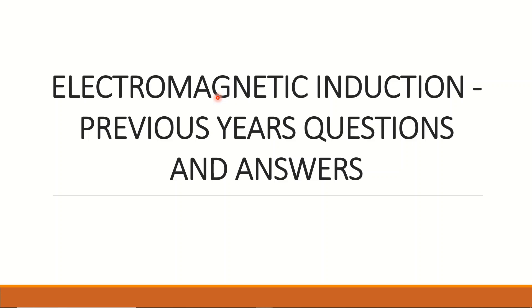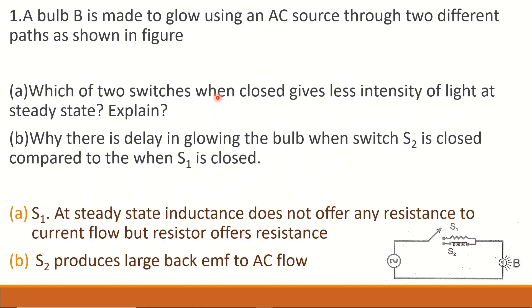Hello, I am going to discuss the previous year's questions and answers. A bulb B is made to glow using an AC source through two different parts as shown in the figure. Which of two switches when closed gives less intensity of light at steady state? Explain.